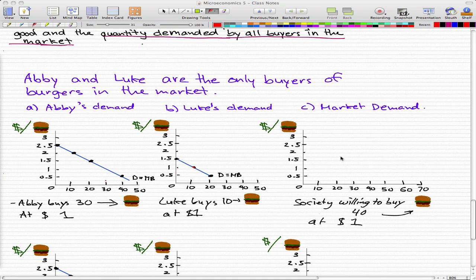Luke's demand curves in the second column, and the whole market's demand curve in the third column. And remember in the market, it only consists of Abby and Luke who are buying burgers.